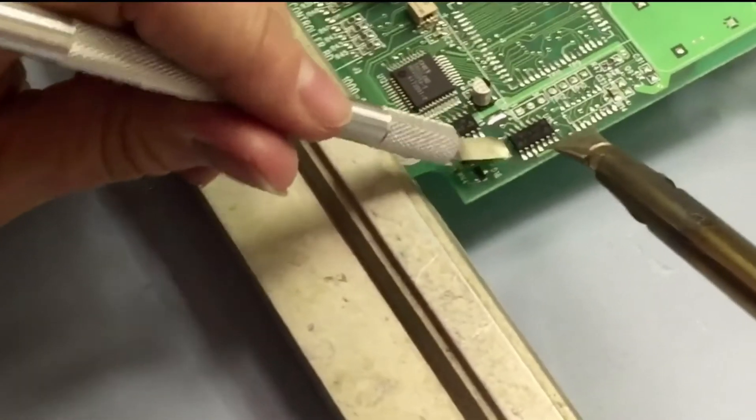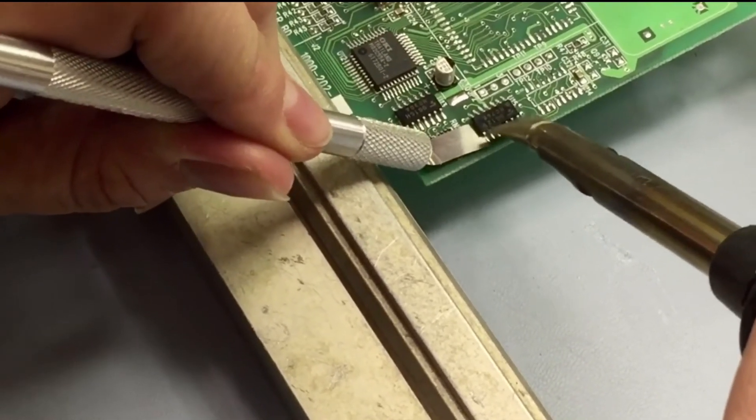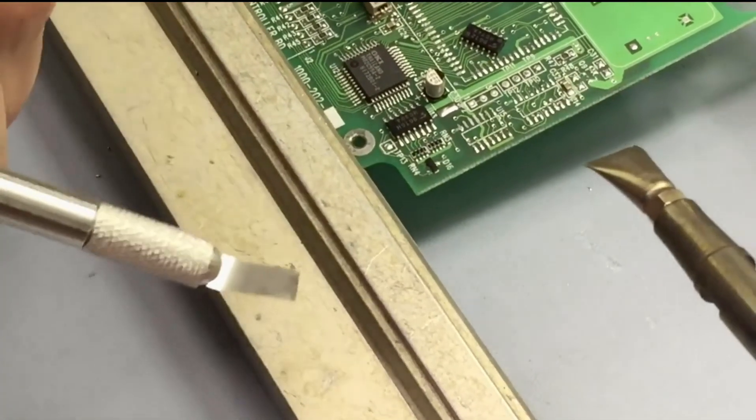Put our shim tool under there and this one usually flows a little bit faster once the other side goes, and as you can see it popped right off.